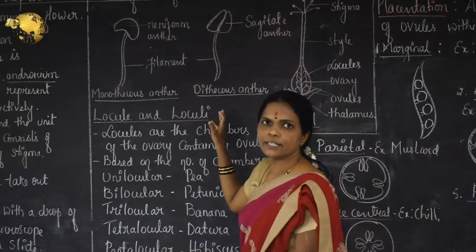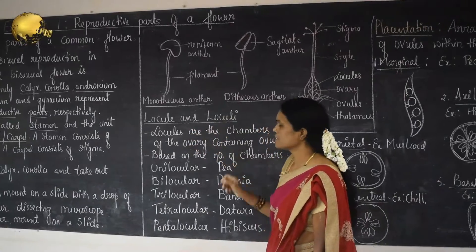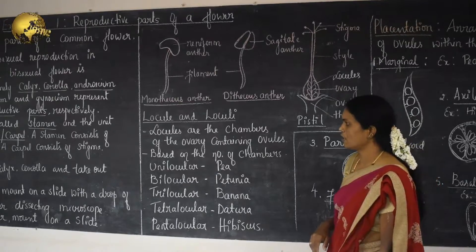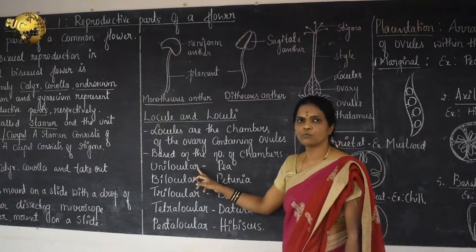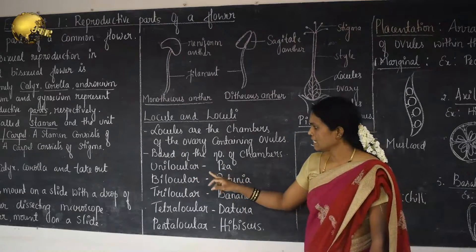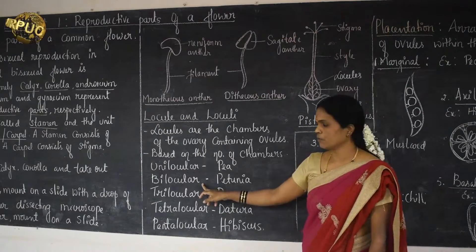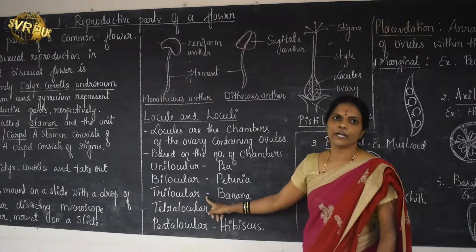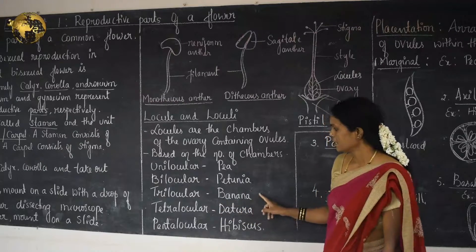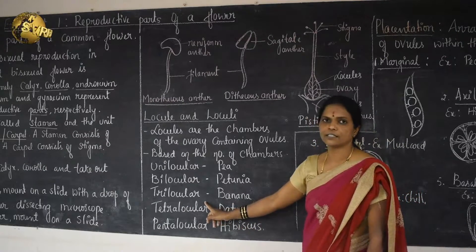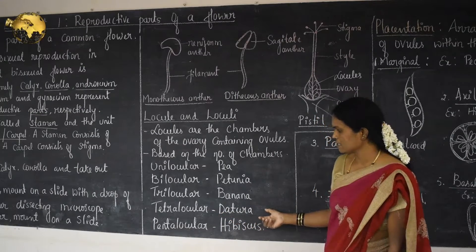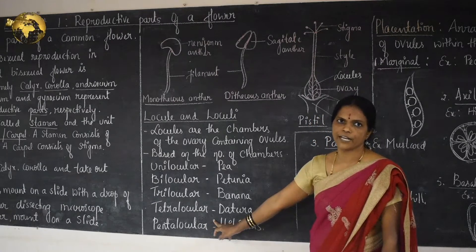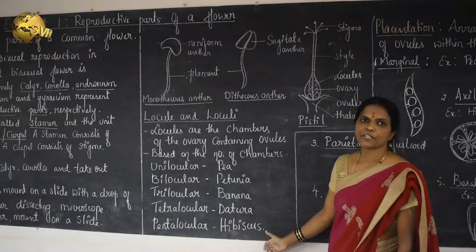Let us look into the locules of the ovary. The locules are the chambers of the ovary containing the ovules. Based on the number of locules, the ovary may be unilocular — example: Pea; bilocular with two chambers — example: Vinca; trilocular with three chambers — example: Banana; tetralocular with four chambers — example: Datura; or multilocular/pentalocular with five or more chambers — example: Hibiscus.